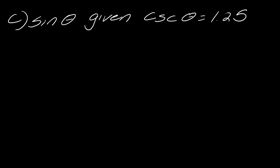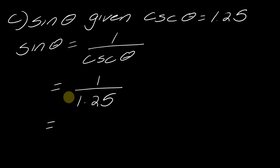Maybe just one more. If you want to pause the video and try this on your own, then hit play when you're ready. I've got sine of theta given that cosecant of theta is equal to 1.25. I know that sine of theta is equal to 1 over cosecant of theta, and so now I'm gonna write this as 1 over 1.25.